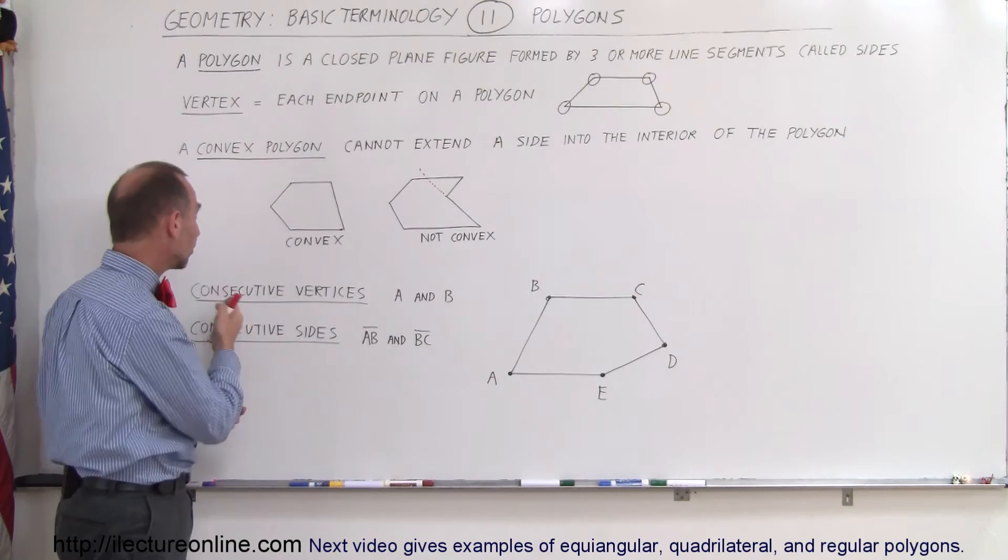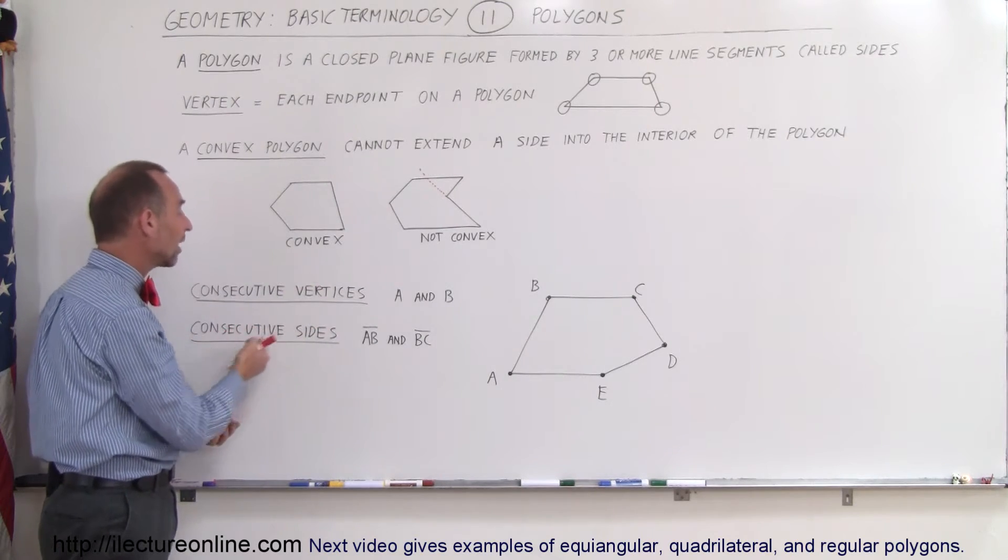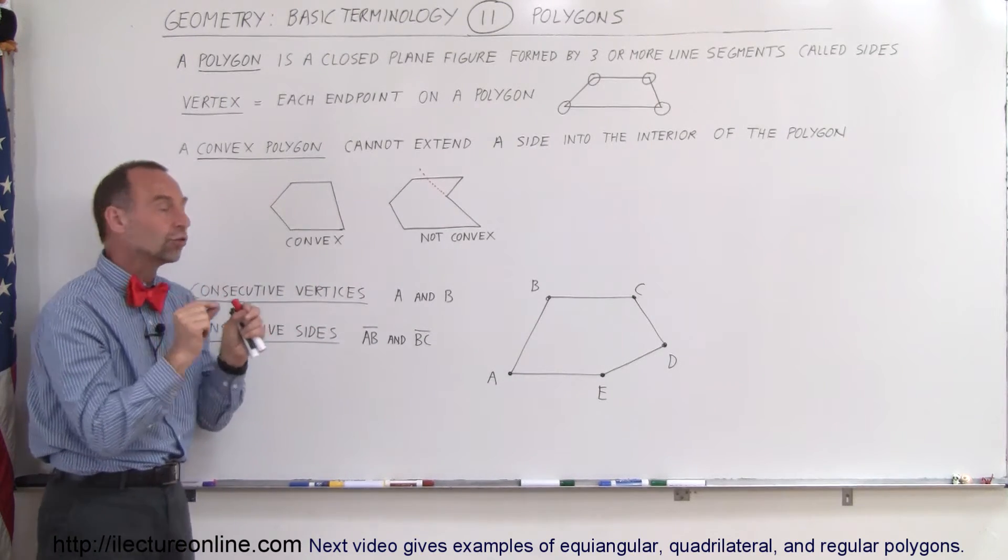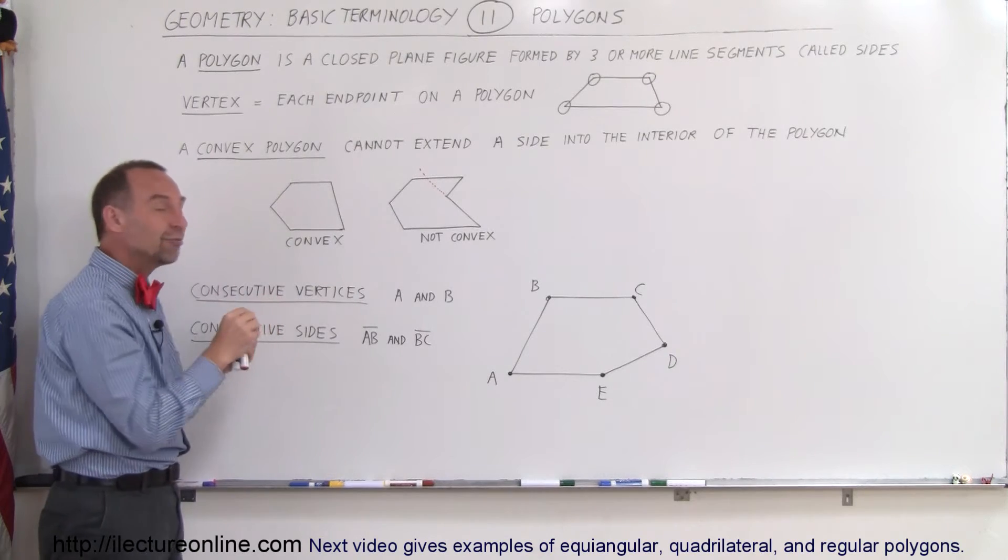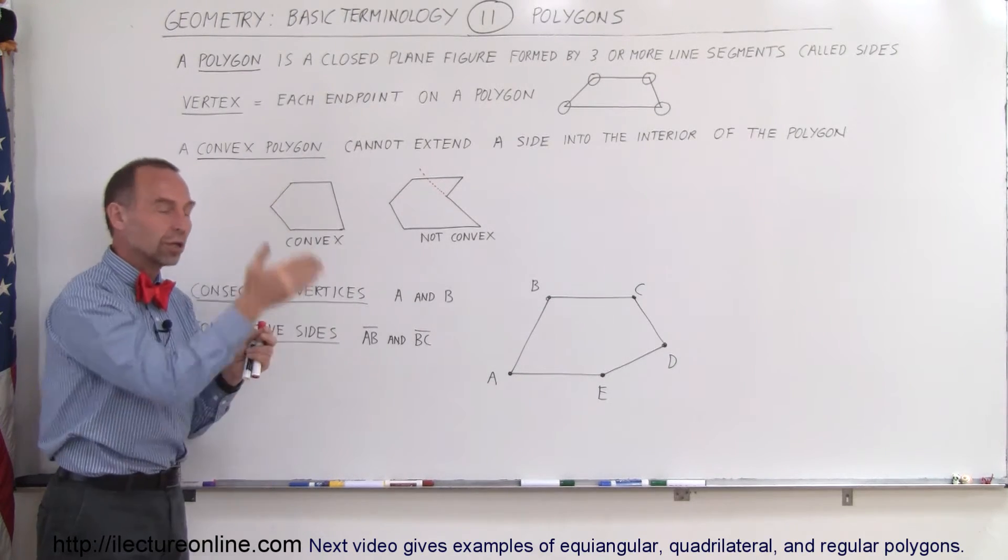And finally, we talk about consecutive vertices and consecutive sides. Remember, the vertices are the corners of a polygon. And consecutive means the next one as you go along a line segment.